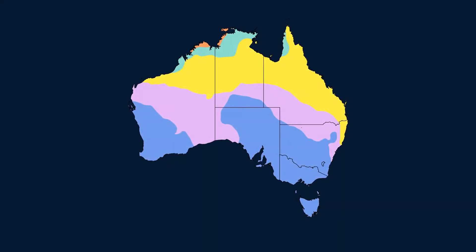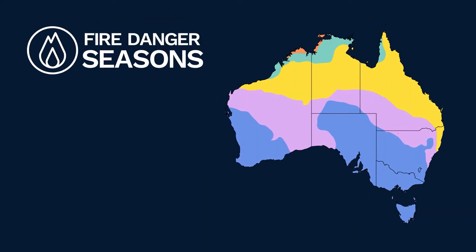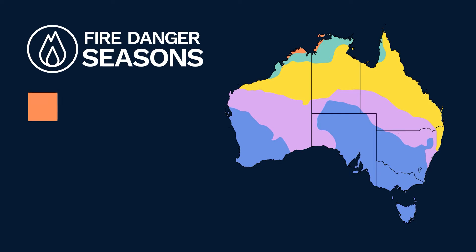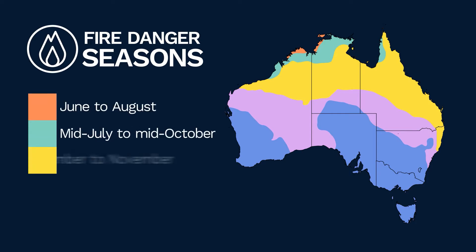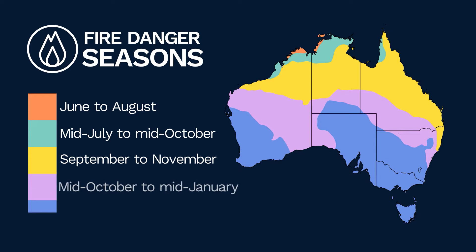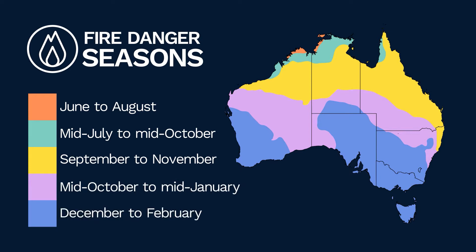For northern Australia, the peak bushfire period is during the dry season, which is generally from June to November. For southern Australia, the bushfire season peaks from mid-October to February. While these are traditional peaks of the bushfire season, local conditions can drive dangerous bushfire activity at any time.